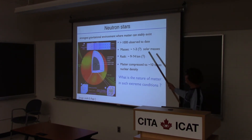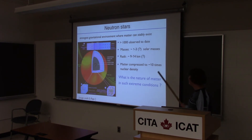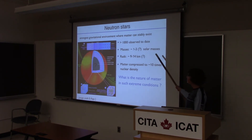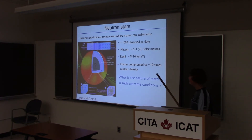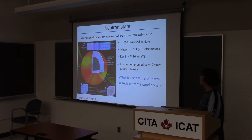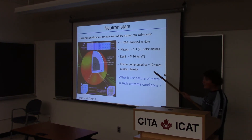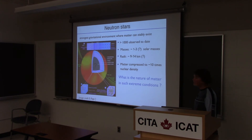We have observed more than thousands of them, mainly in our galaxy. They have masses between one and some unknown upper mass, but roughly no more than three solar masses. Radii are fairly uncertain, 9 to 14 kilometers. The matter in the center is compressed to up to 10 times nuclear density.